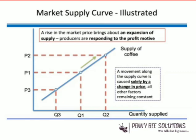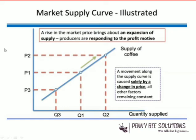If you consider price P1, it's average and so the quantity supplied is average. At P2, where the price is high, the quantity supplied is high as well. At P3, where the price is relatively low, the quantity supplied is low because producers are not making sufficient profit. So it's a profit-driven, profit motive thing.